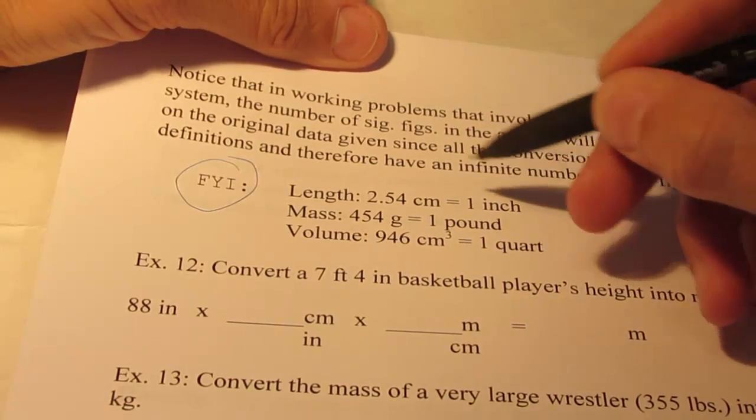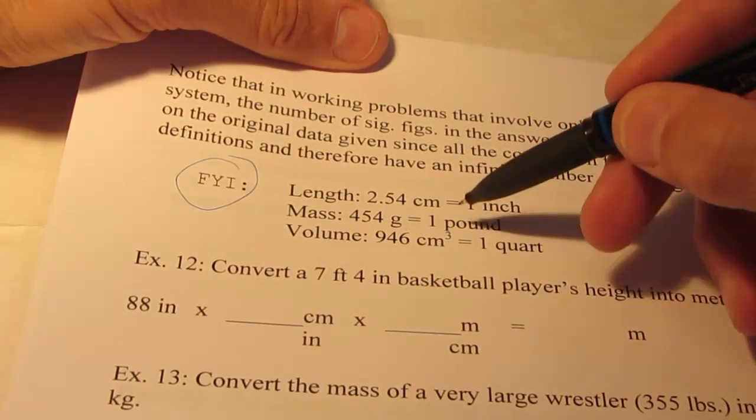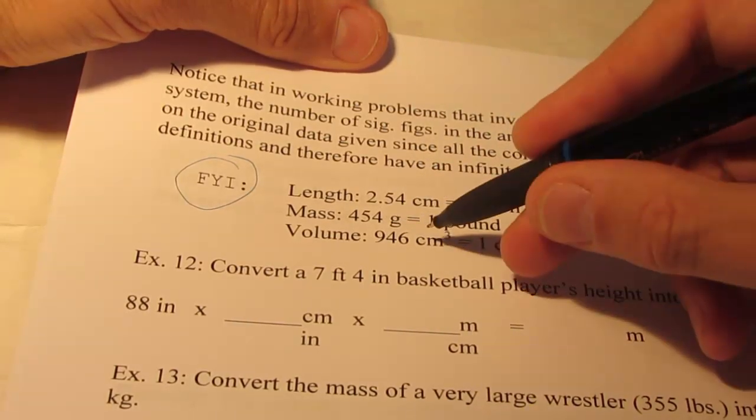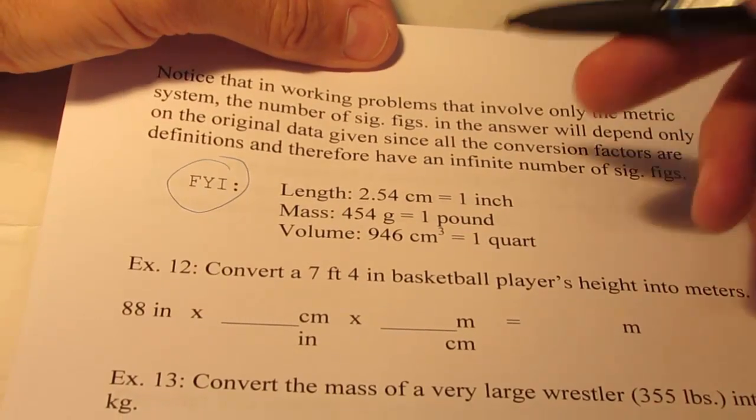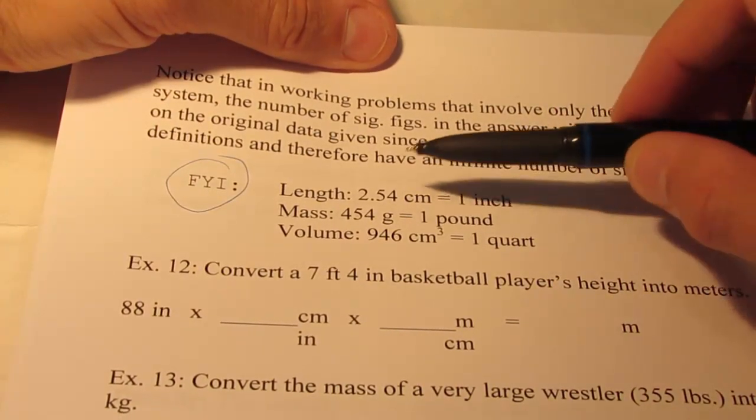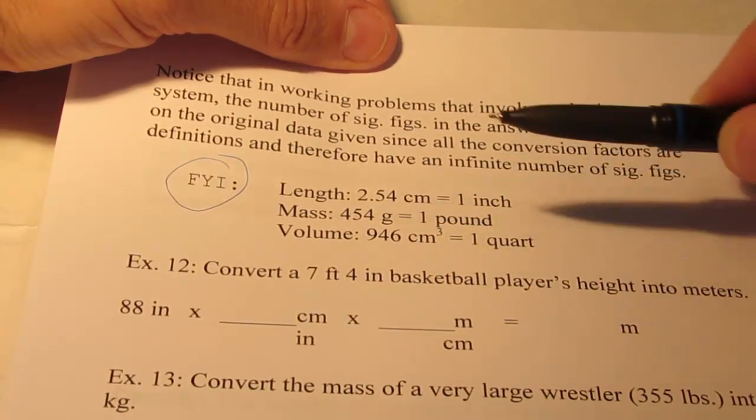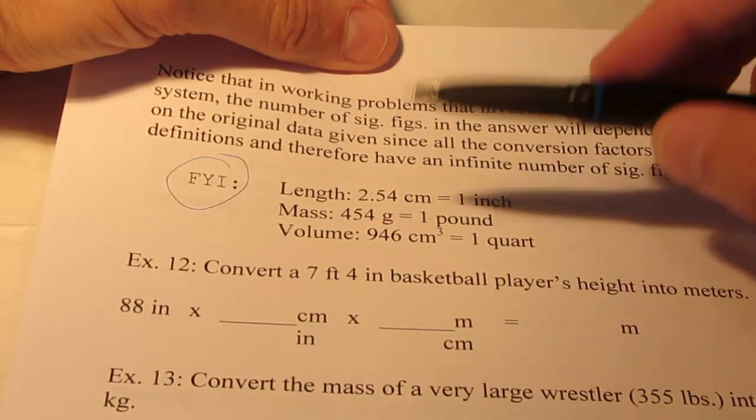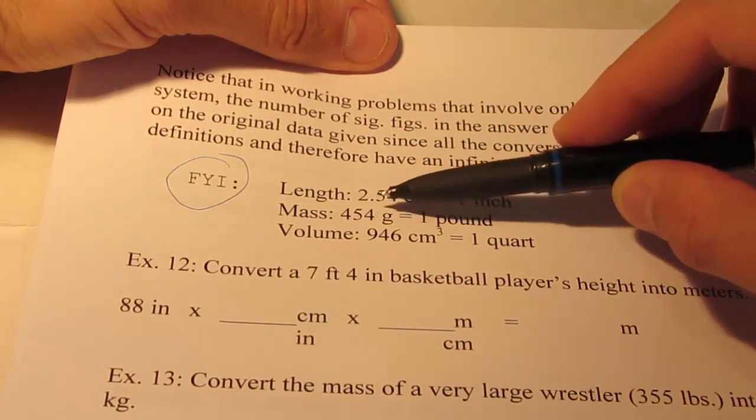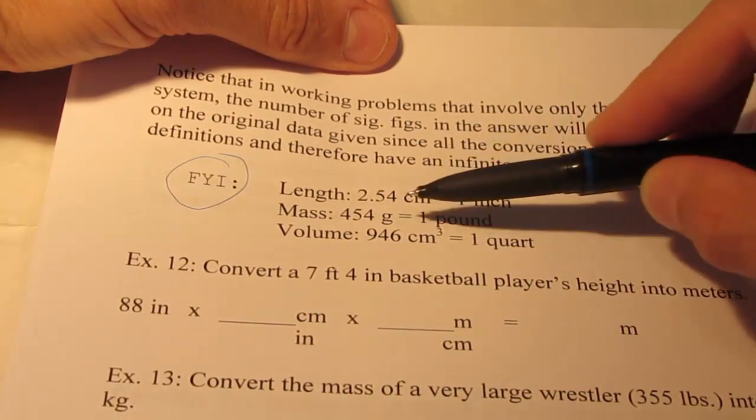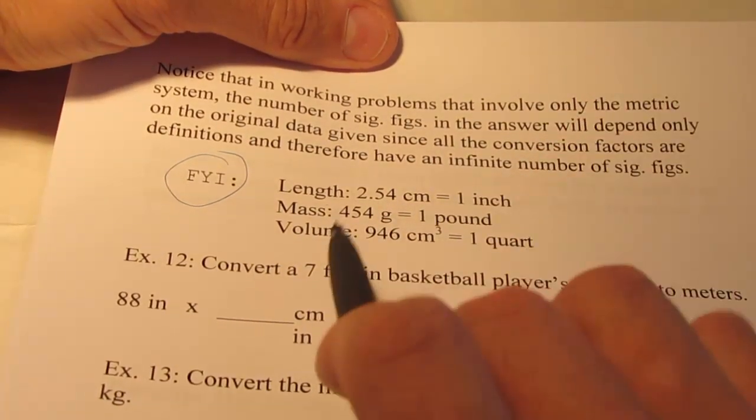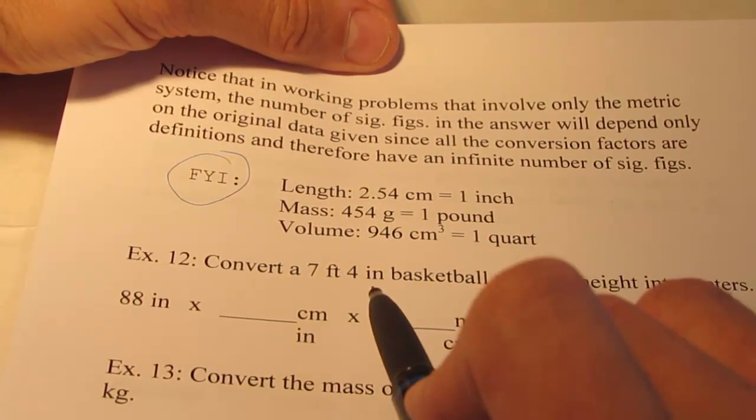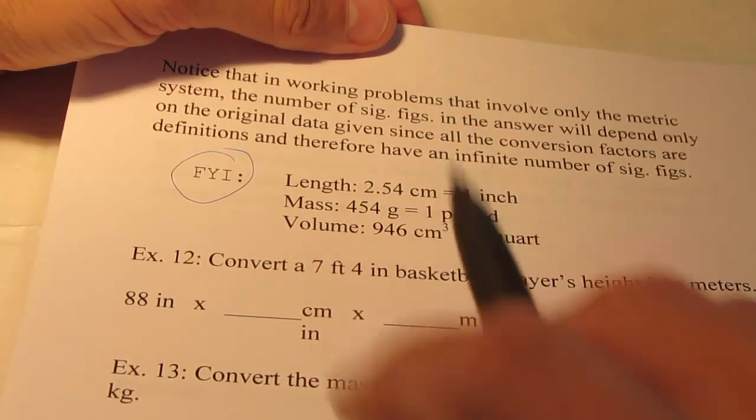For instance, one inch is the same as 2.54 centimeters, one pound is the same as 454 grams, and one quart is 946 cubic centimeters. And technically, these conversion factors here from metric to English each only have three significant figures. So in reality, 453.6 grams is equal to a pound. So these might limit us in our significant figures in our answer, unlike conversions within the metric system.